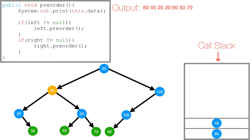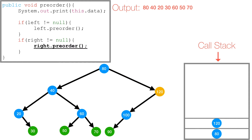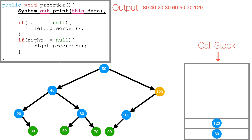We're back at 40. We've explored 40's left subtree containing 20 and 30, and we've also explored 40's right subtree containing 50, 60, and 70. So 40 gets popped off the call stack and we're back at 80. We've now explored the entirety of 80's left subtree, but we haven't explored 80's right subtree. So we check if 80's right is not null — it's not — so we call preorder on 80's right subtree. 120 gets pushed to the call stack, and we print 120.